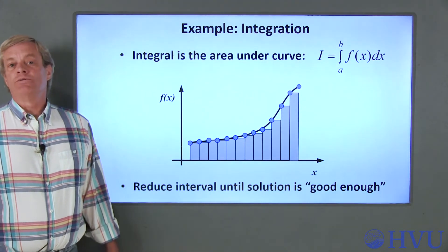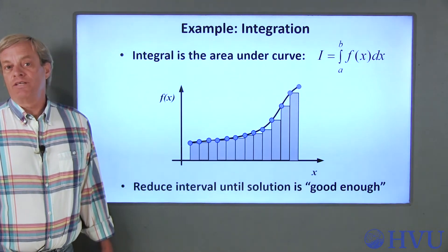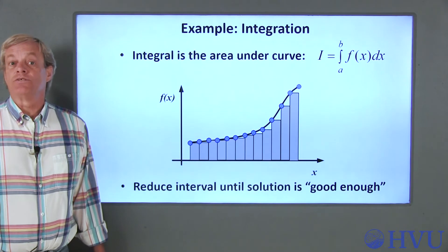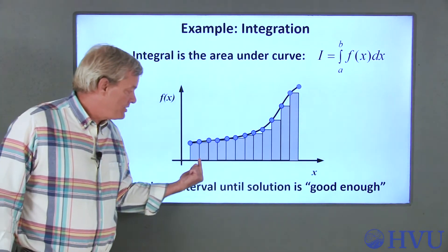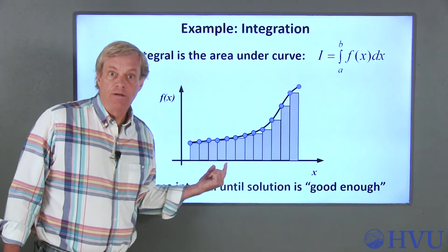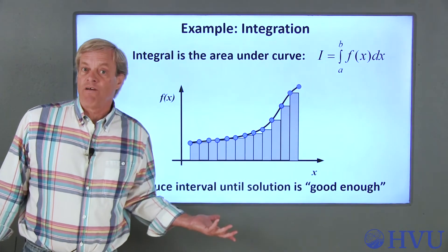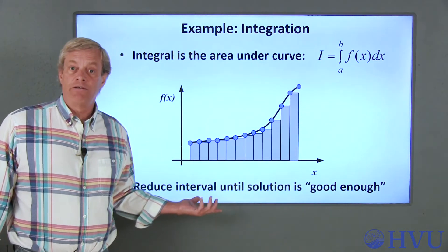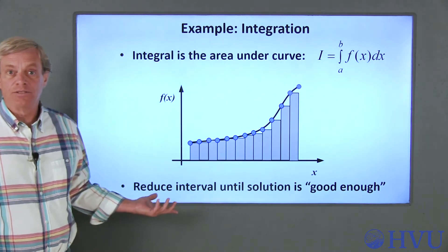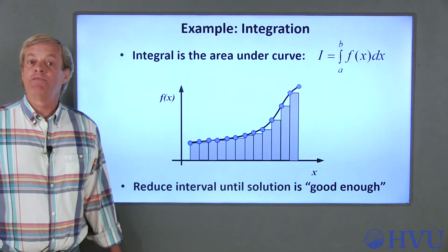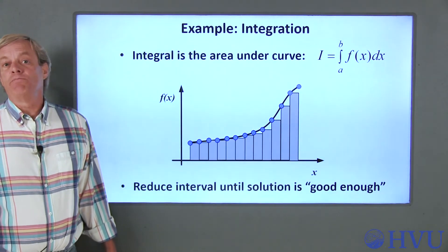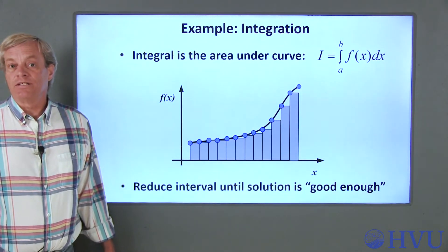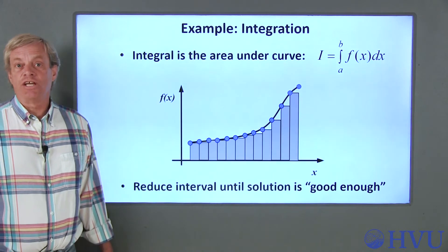Again, we're doing a series of pretty simple calculations. We just choose the values at the edges of the intervals, use those values to find the areas of the rectangles, and then sum up the individual areas. Keep repeating the process until the area stops changing.